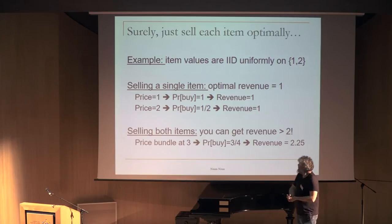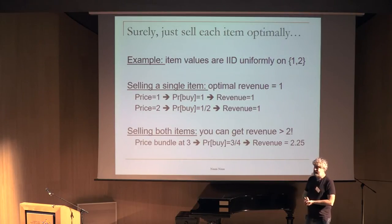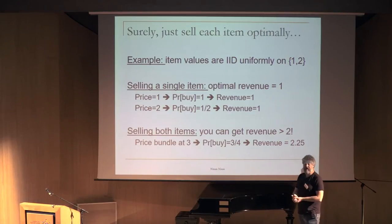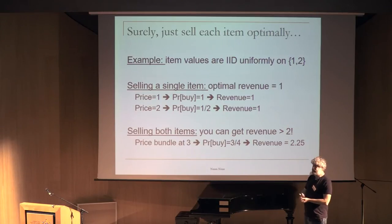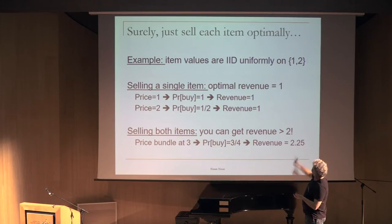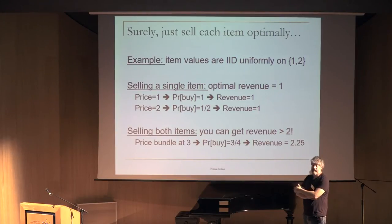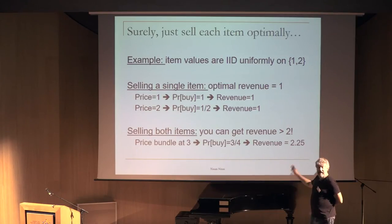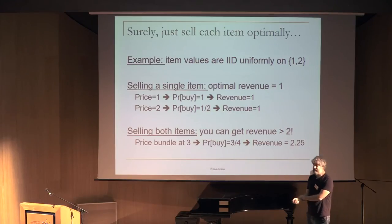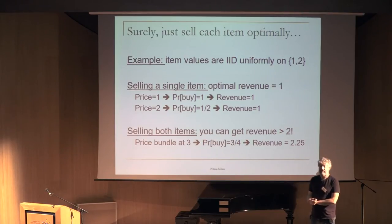But if you bundle them together — tell the buyer they can only get both or neither for price three — the probability that both items together are worth at least three is three-quarters (unless both values are 1). So revenue is 3 × (3/4) = 9/4, which is strictly more than 2. This is really surprising: the best way to sell two items is not just selling each separately.